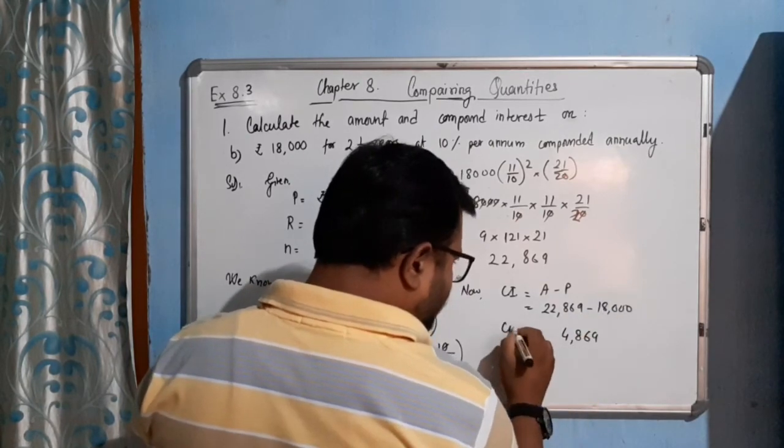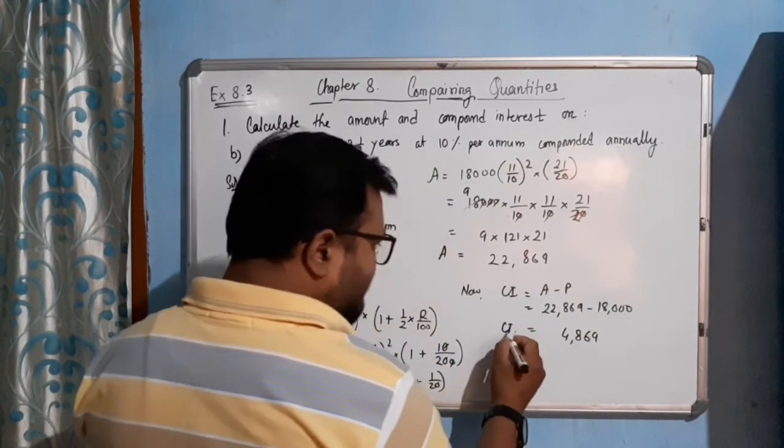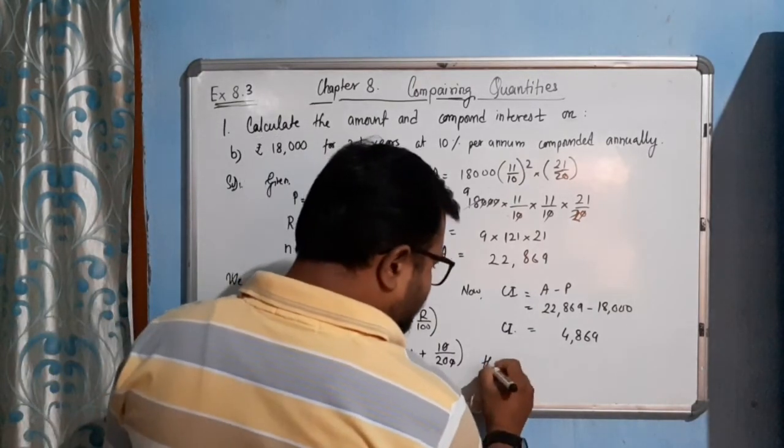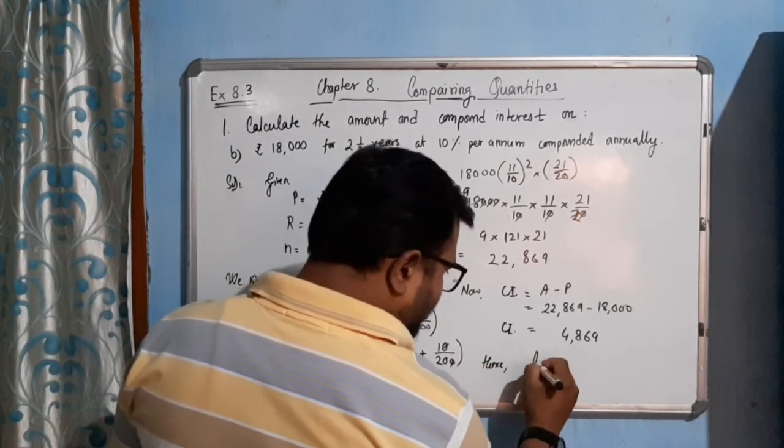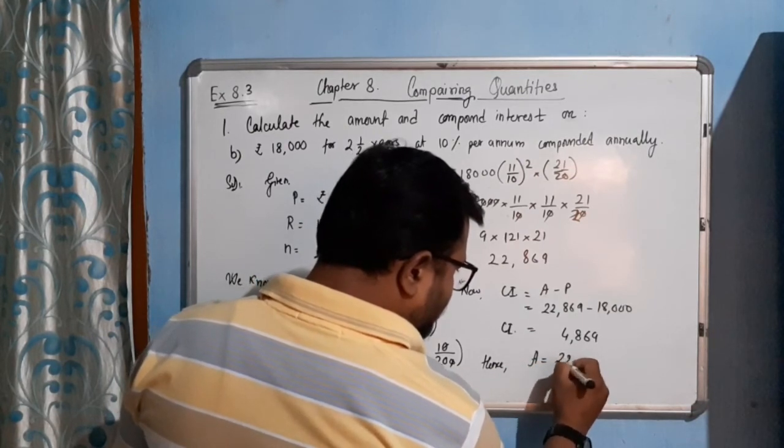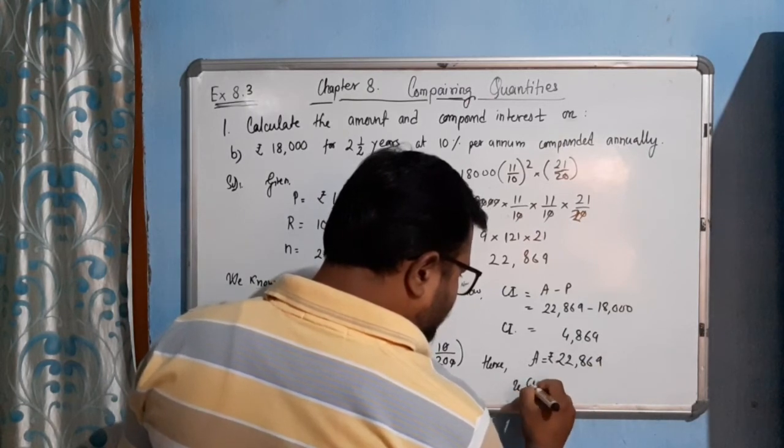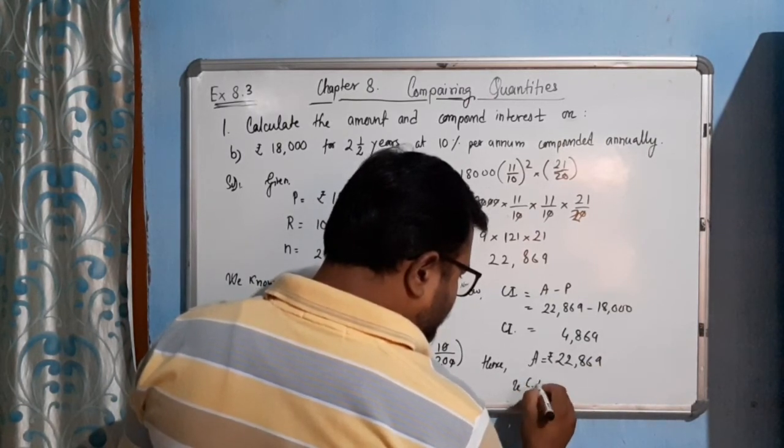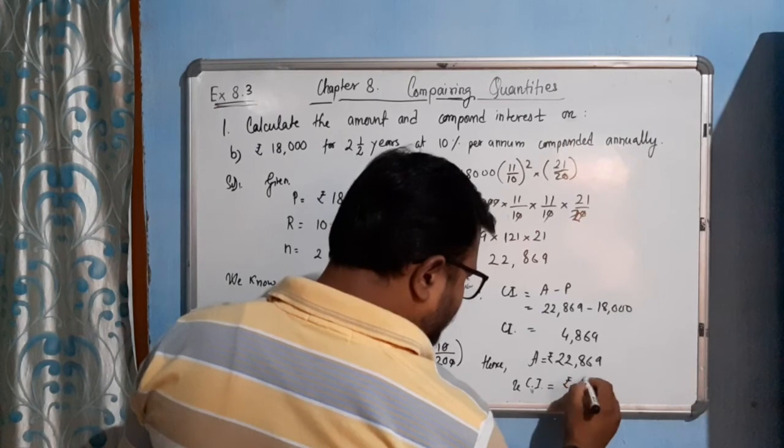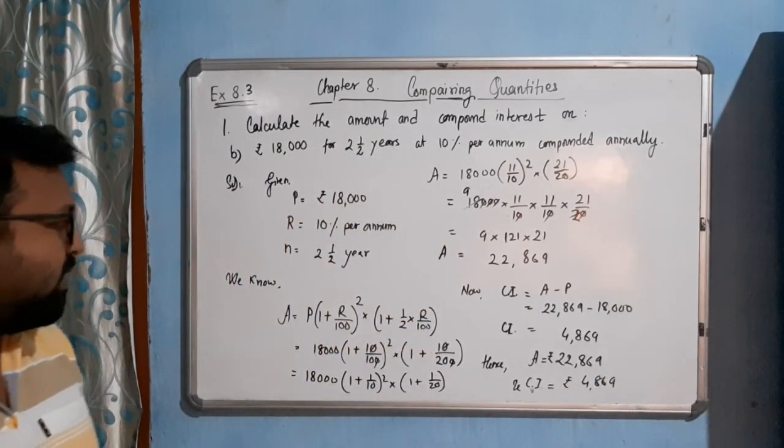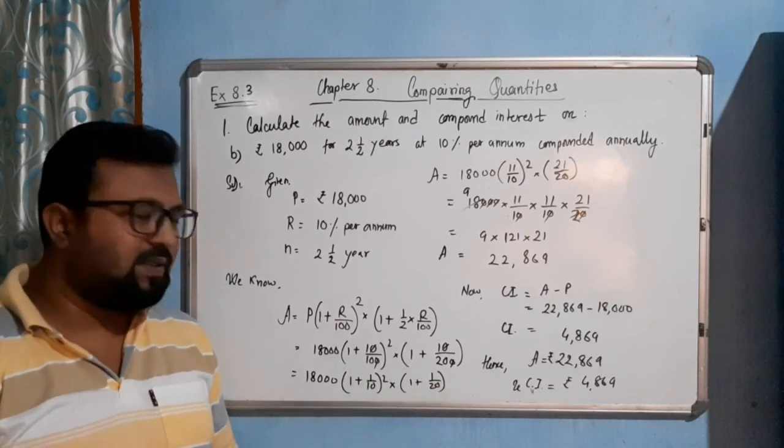And we will write: A equals ₹22,869 and CI equals ₹4,869. So I hope you understood this part. Thank you.